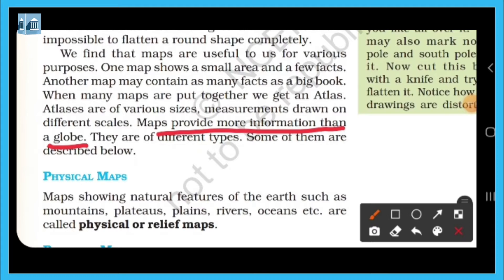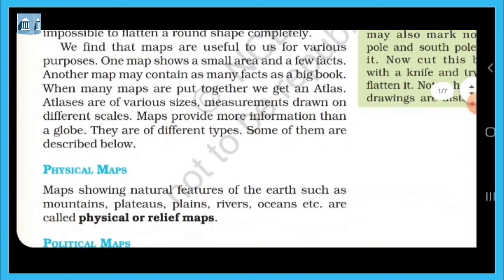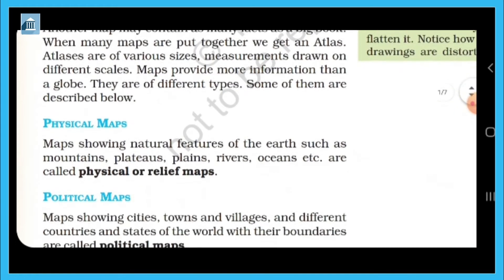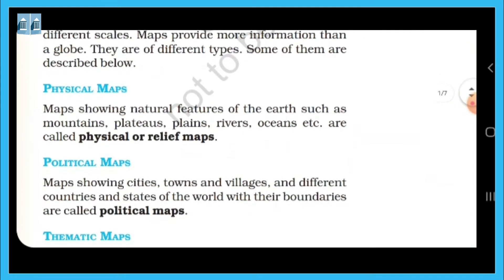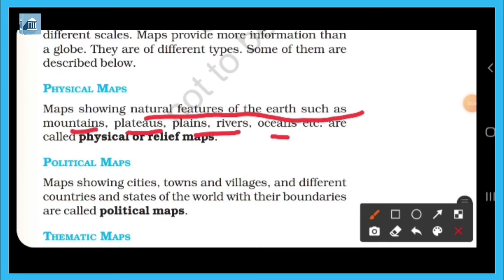There are different types of maps. Some of them are physical maps. Physical maps show natural features of the earth such as mountains, plains, rivers, and oceans. These are all shown in physical maps.